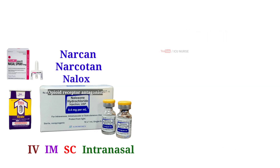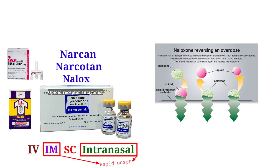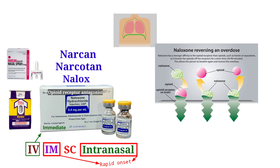Naloxone is an opioid receptor antagonist, meaning it binds to opioid receptors and reverses or blocks the effects of other opioids. Naloxone has a short duration of action. Intranasal and intramuscular routes have rapid onset, while intravenous is immediate. Naloxone quickly reverses an overdose of opioids by blocking the effects of opioids, restoring normal breathing within 2-3 minutes. More than one dose may be required when stronger opioids like fentanyl are involved.